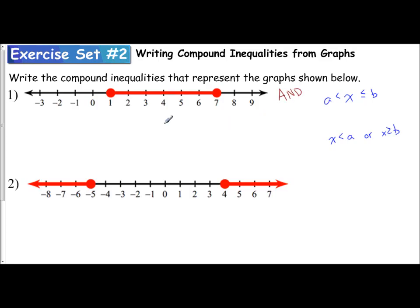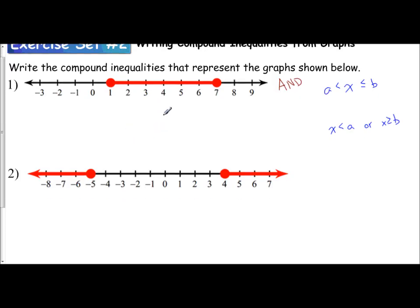This is very easy to write the inequality from. We want to have our solution space, which is represented by our X, between the two endpoints. We want it between one and seven.